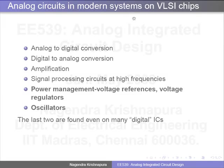On VLSI chips, the analog functions you see include analog-to-digital conversion, digital-to-analog conversion, and of course amplification. You also do signal processing at high frequencies in the analog domain, mainly because it becomes too expensive in terms of power to do it in the digital format. If you already have a signal at a very high frequency, you cannot oversample it and store it in a digital format — even if you could, it may be too power hungry — so you do it in the analog domain.